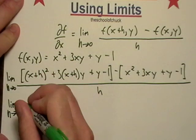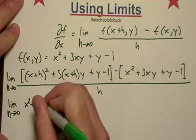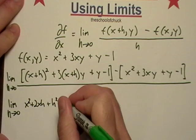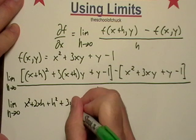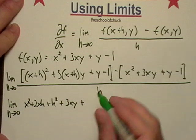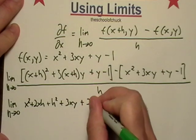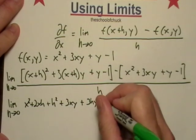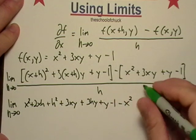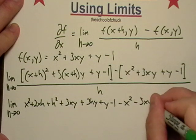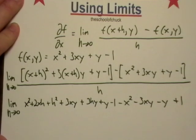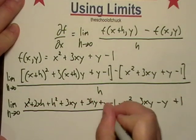I'm in a real big hurry to simplify this thing. We get x squared plus 2xh plus h squared plus 3xy. The y distributes and the three distributes. Then x squared minus 3xy minus y plus 1. I'm just taking the negative and distributing that in there as well.